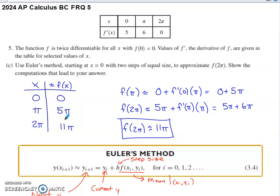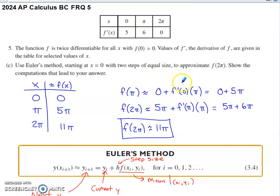Since we want the estimate at two pi, we do one more round of Euler's method. We take the current y value of five pi and add the slope of the tangent line at the ordered pair pi comma five pi, multiplied by the step size. The derivative value at pi is six, so we get five pi plus six pi. That simplifies to eleven pi as our estimate for f of two pi.